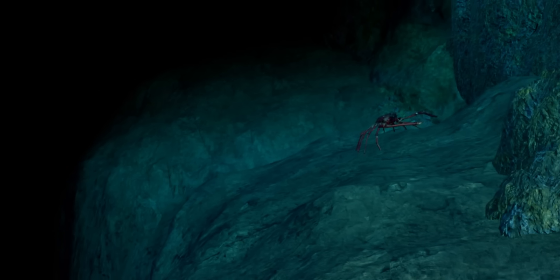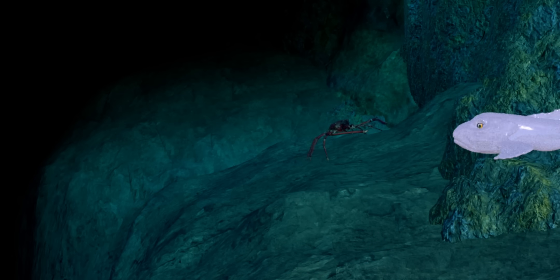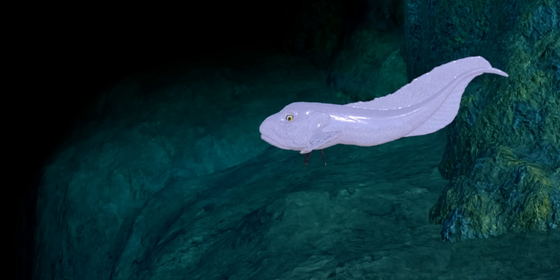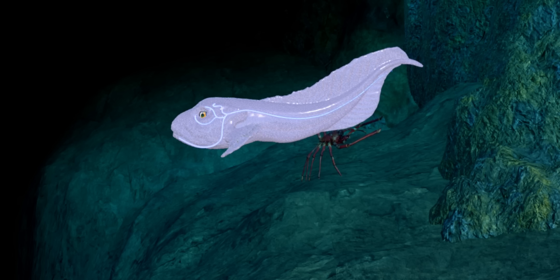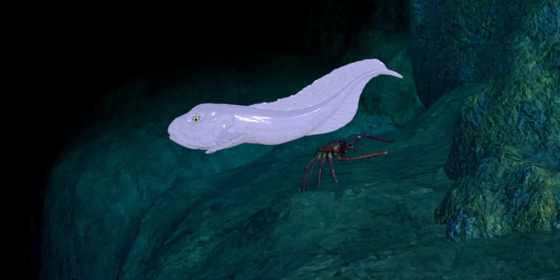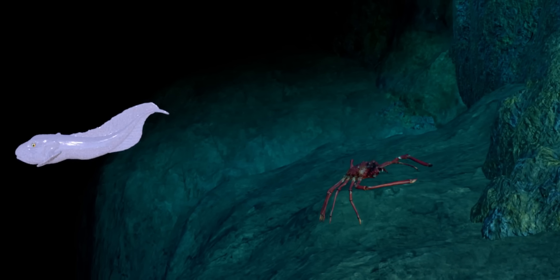You might be wondering how these creatures are able to navigate without light. They rely heavily on senses other than sight. Many have highly developed lateral lines, organs that can sense tiny changes in water pressure and vibrations, allowing them to detect a predator or prey moving nearby.